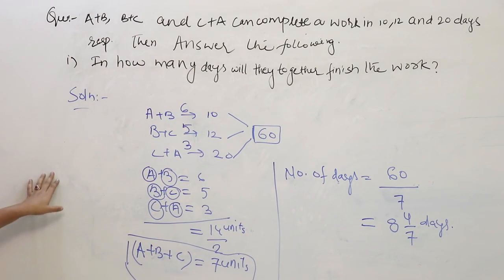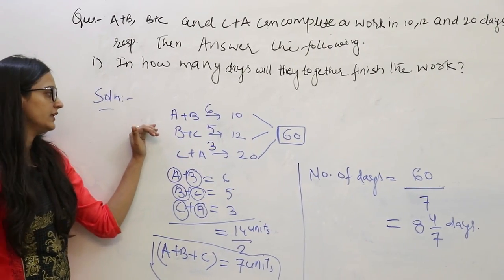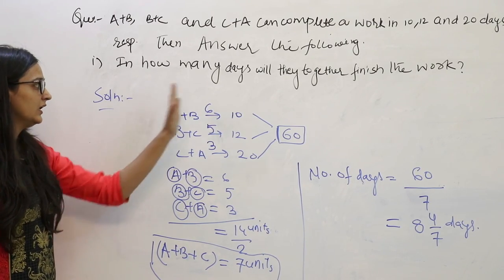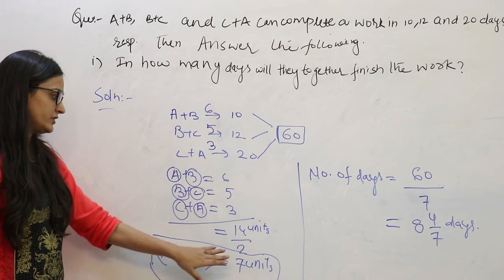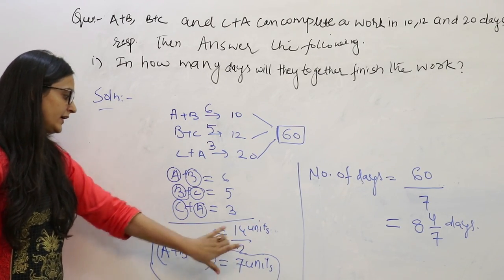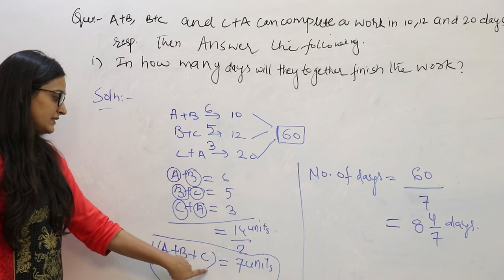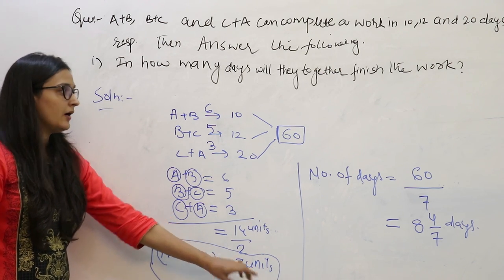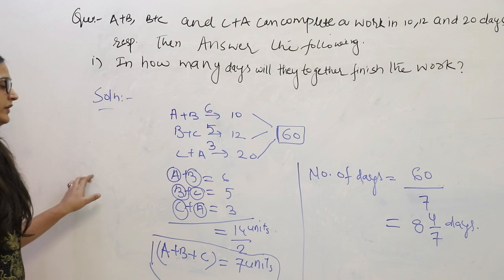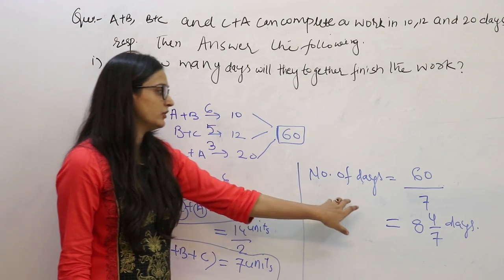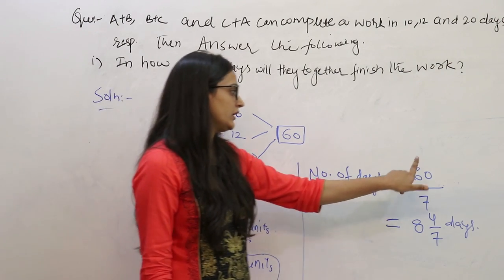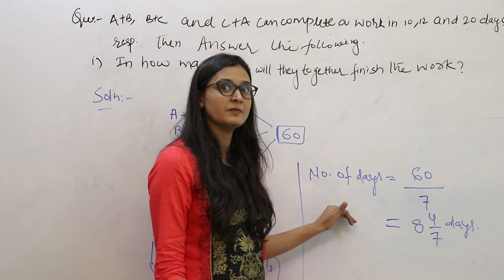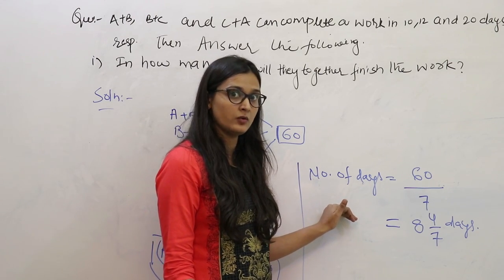I repeat: we found the 1-day efficiency of A+B, B+C, and C+A, added all three efficiencies together, then divided by 2. This gave us the 1-day work of A+B+C. To find the number of days, we divide the total work by the efficiency, which gives us the number of days for the work to be completed.